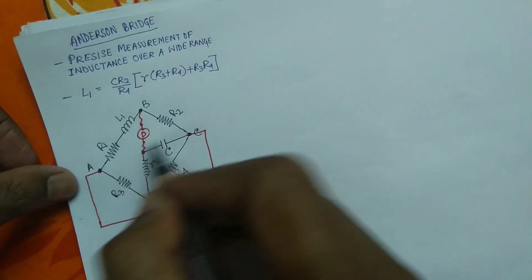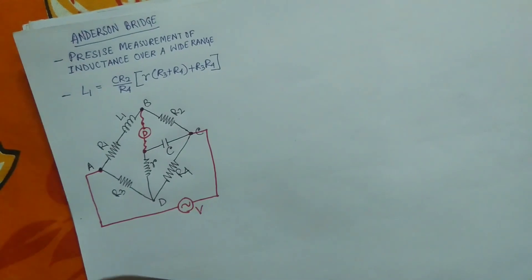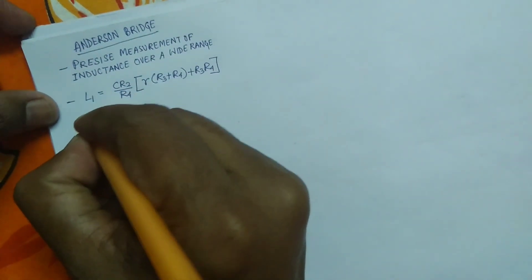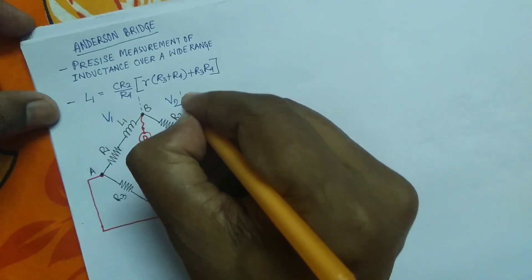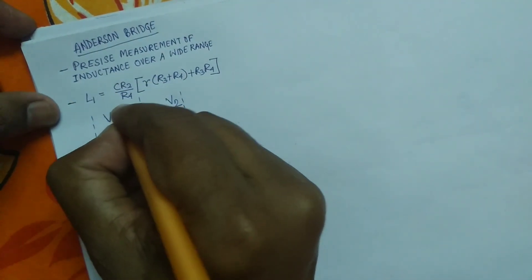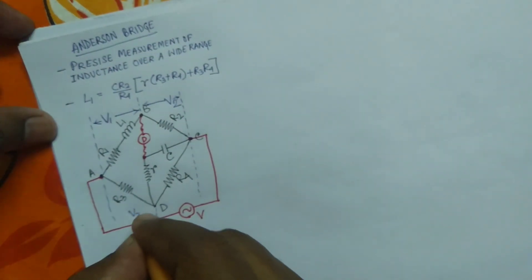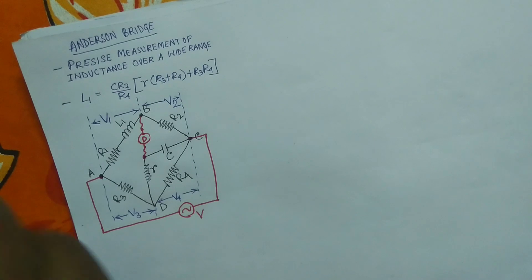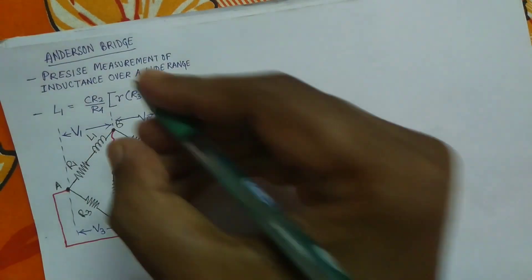The voltage across A and C is V, so the voltage across path ADC and path ABC will both equal V. The voltage drop across A and B is V1, across B and C is V2, across A and D is V3, and across D and C is V4.